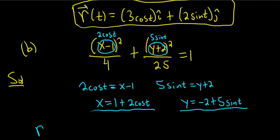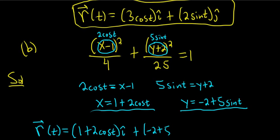And to find our vector-valued function, just like before, it's going to be x times our vector i-hat. So it'll be 1 plus 2 cosine t i-hat. And then it would be negative 2 plus 5 sine t j-hat.